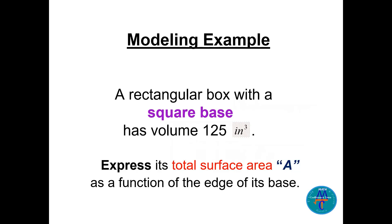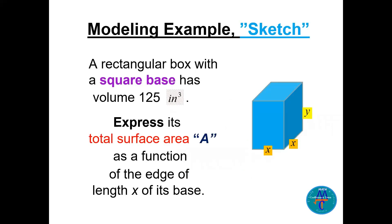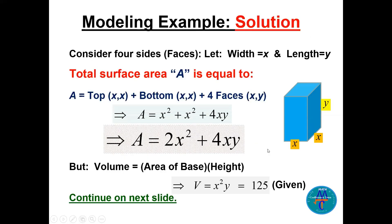We will see here a very nice example about modeling. A rectangular box with a square base has a volume 125 inch cubed. Express its total surface area, let's call it capital A, as a function of the edge of its base. Now try to read this, try to understand it. I will do a little sketch here before I show you the solution. We have a rectangular box like this. The base here is a square so this is x and this is x. The whole volume is 125 inch cubed and this is the y here, the height. We need to express the total surface area, so the area of all the sides here, as a function of the length x of its base. So how do we start?